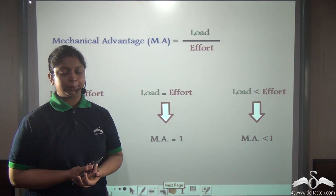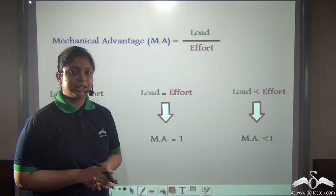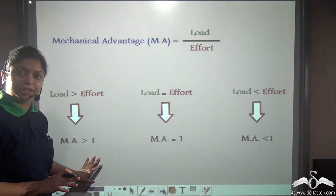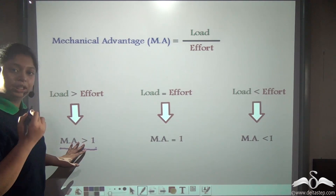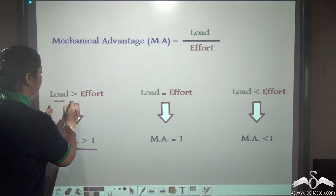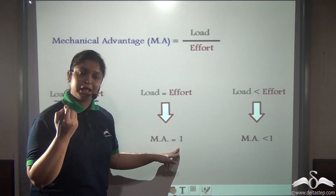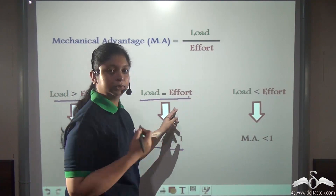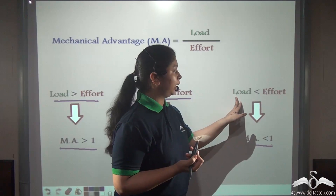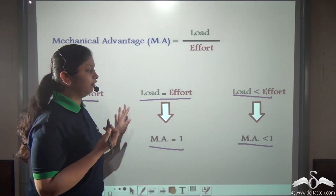Now there are different kinds of simple machines. Sometimes the load might be greater than the effort, sometimes they might be equal, or at times the effort might be greater than the load. Following these three conditions, mechanical advantage can be greater than one — when the load is greater than effort, meaning you apply a smaller effort to overcome a larger load. It equals one when load equals effort. And it is less than one when effort is greater than the load.